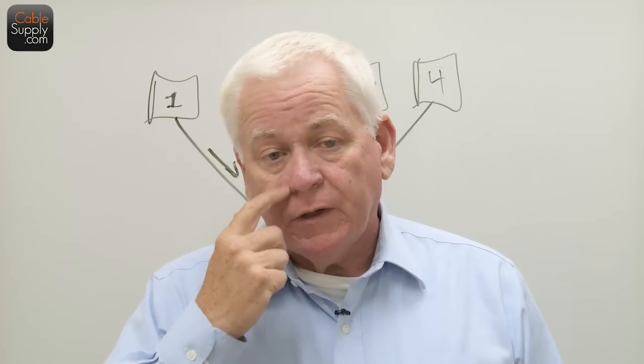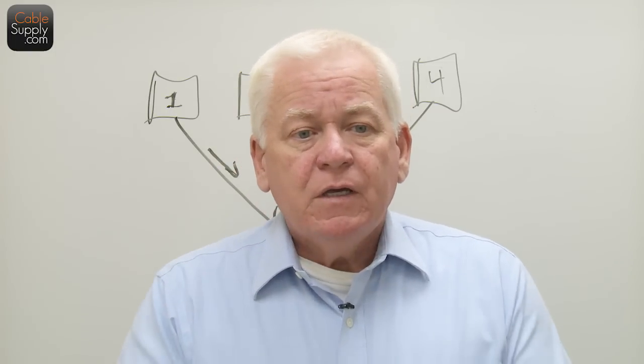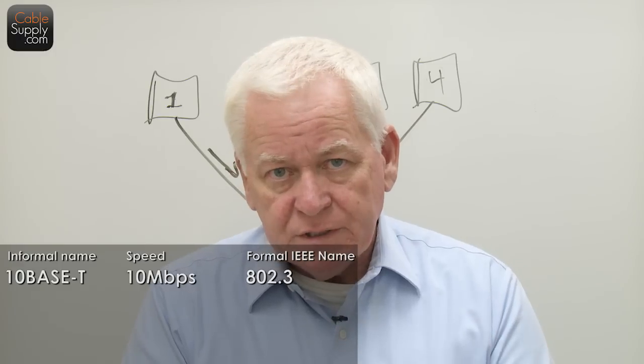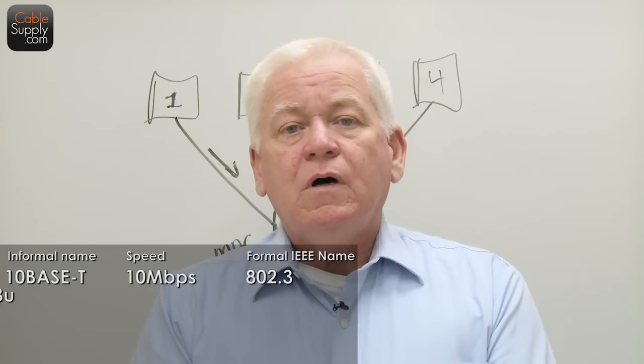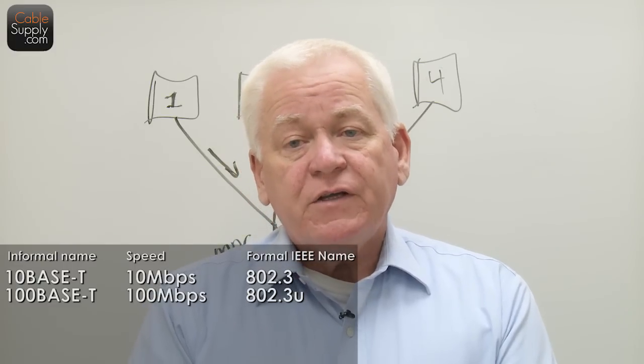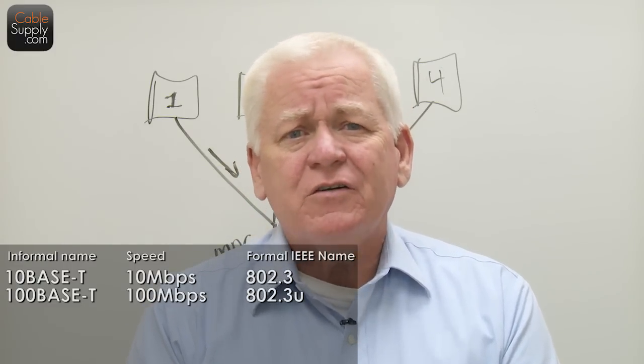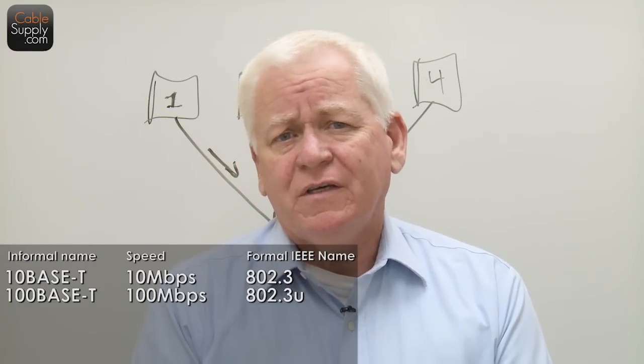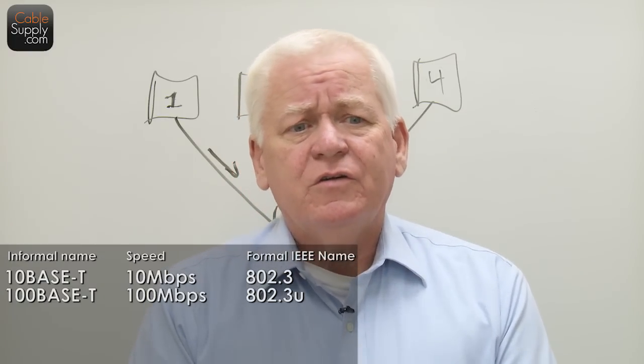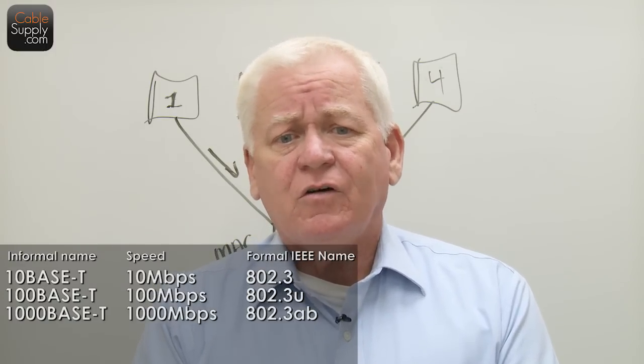At the same time, you went from 10BaseT on Category 3, to 100BaseT which is Fast Ethernet — that's pretty much the general standard today, most people have 100BaseT. And then you go to 1000BaseT, one gigabit, and you can do that with Cat6. You can also do it with Cat5e for short distances.